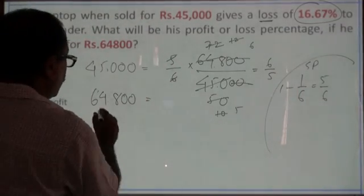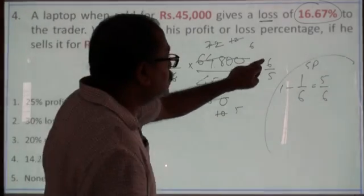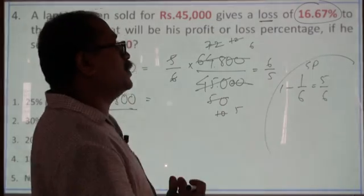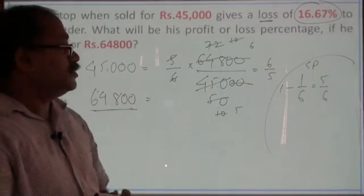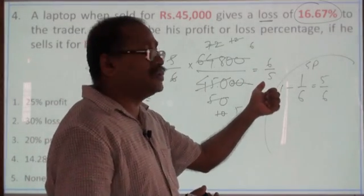Okay, so, this selling price is what part of the cost price? 6 by 5 of the cost price. Now, as I said that when we are dealing with the fraction,